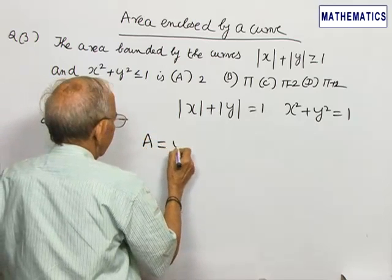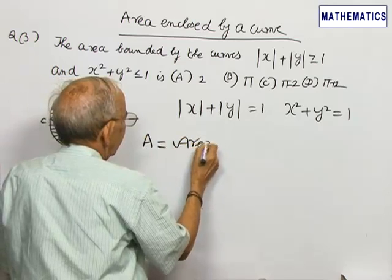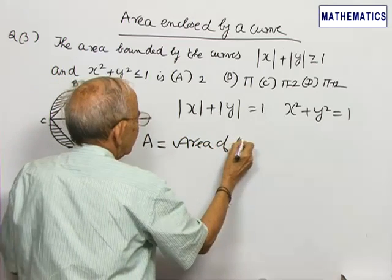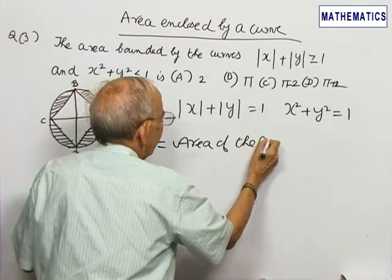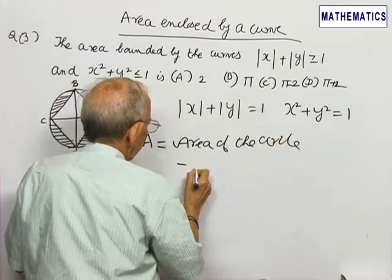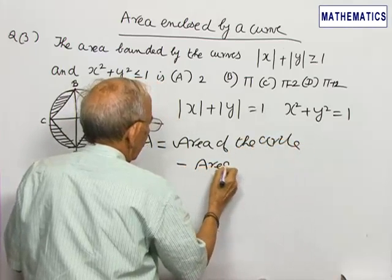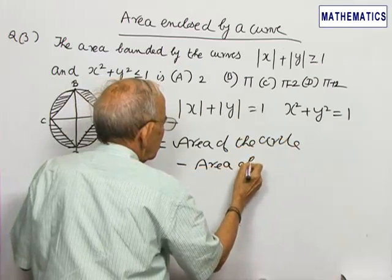Therefore, the required area is the area of the circle minus the area of the square.